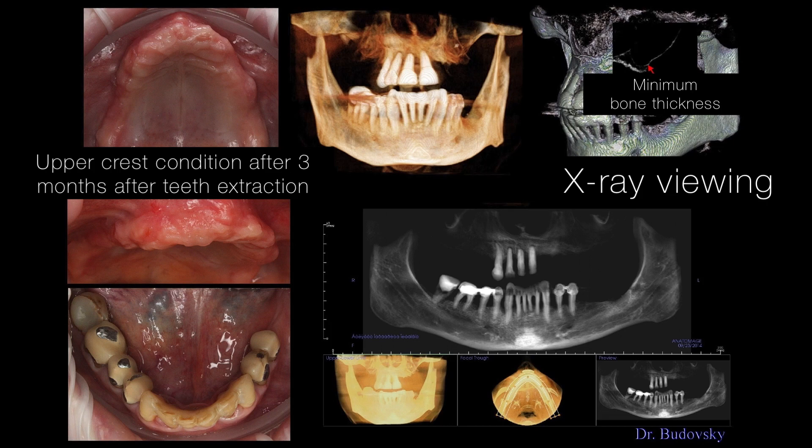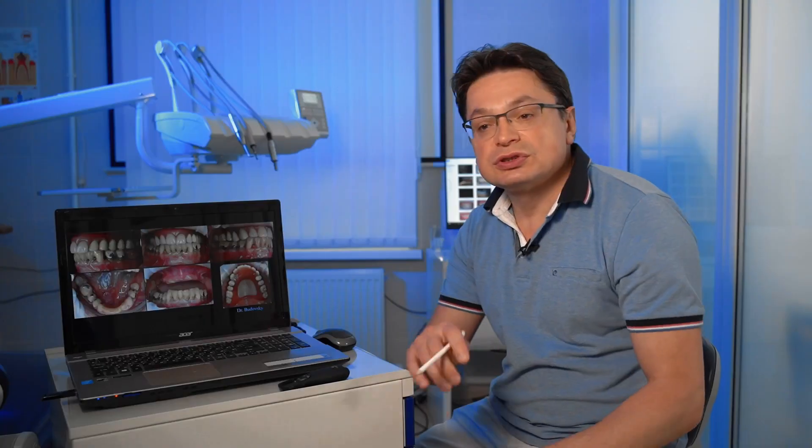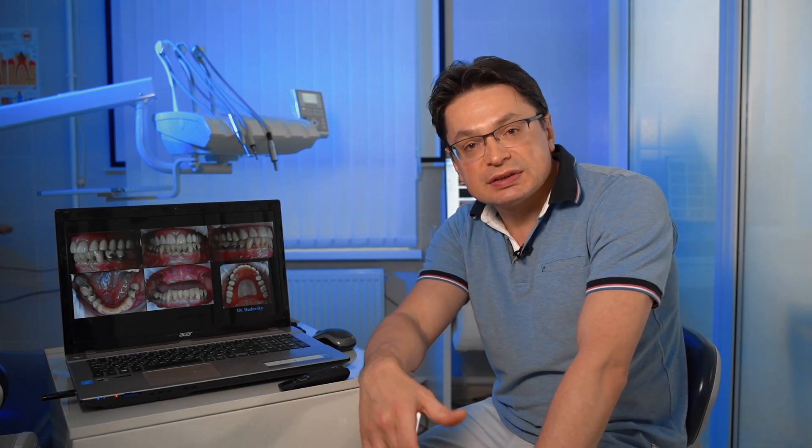We extracted the remaining teeth on the upper jaw and some on the lower jaw as they were bad. Look at the prosthesis on the upper jaw — it has an open palate design. It's probable that the patient asked for it. Removable prostheses are typically fixed by their wide palatal area, but patients often dislike it as it causes pressure, takes up space in the oral cavity, limits space for the tongue, and causes discomfort.